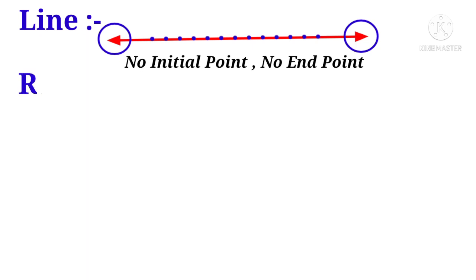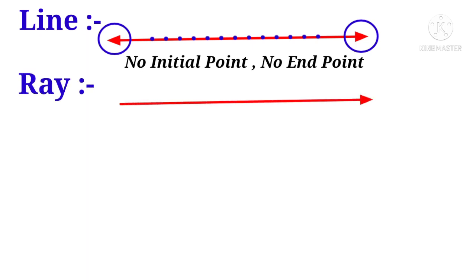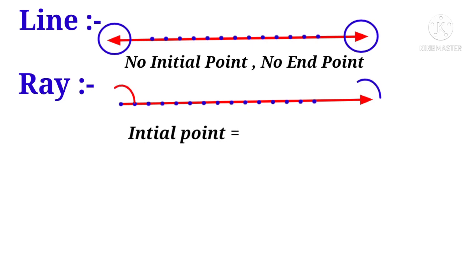Now let us take a ray. Draw the picture of a ray. Observe that there are infinite number of points on a ray. On the left hand side, observe that there is one initial point. The right side arrow mark symbol indicates that there is no end point.